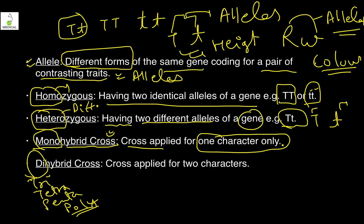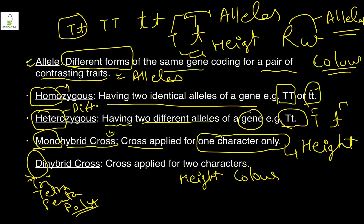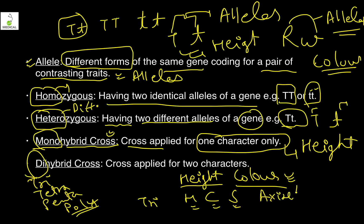Mono means single and di means two in hybrid crosses. If only one character is studied in a cross — for example only height — it is a monohybrid cross. If two characters are studied, such as height and color, it is a dihybrid cross. Three characters gives a trihybrid cross, four a tetra hybrid, and if there are more than two characters it is also called a polyhybrid cross.